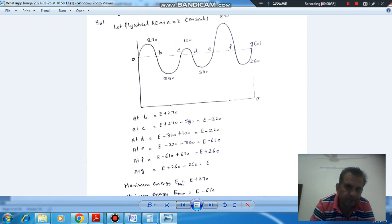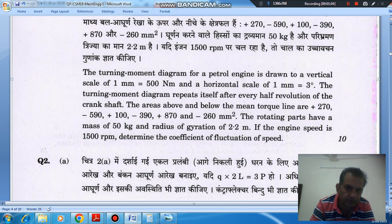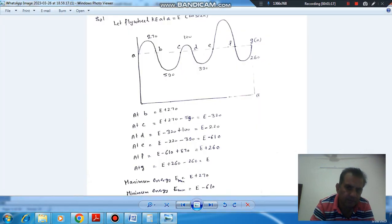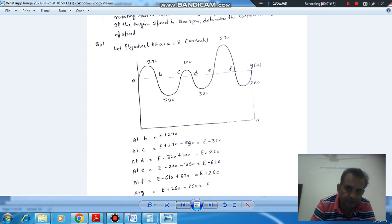So here, this is a turning moment diagram. First of all, there is plus 270 and then minus 590, and then 100, minus 390, plus 870, minus 260 areas of turning moment. At point A, the energy E, then plus 270, so we'll draw above it. And then minus 590, so we'll draw below it. Then minus 390, plus 870, and minus 260.